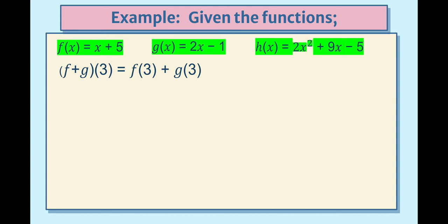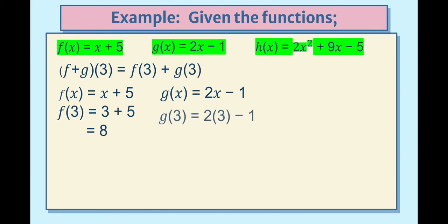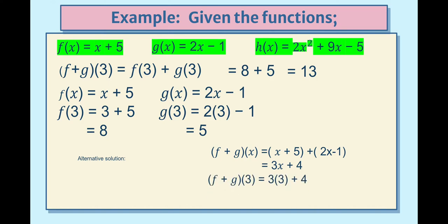Another example: (f + g)(3). Here x = 3, so we find f(3) + g(3). Using f(x) = x + 5, substitute x = 3: f(3) = 3 + 5 = 8. Using g(x) = 2x − 1, substitute x = 3: g(3) = 2(3) − 1 = 5. Since we're finding the sum, 8 + 5 = 13. Alternative solution: using (f + g)(x) = 3x + 4, substitute x = 3: 3(3) + 4 = 13.